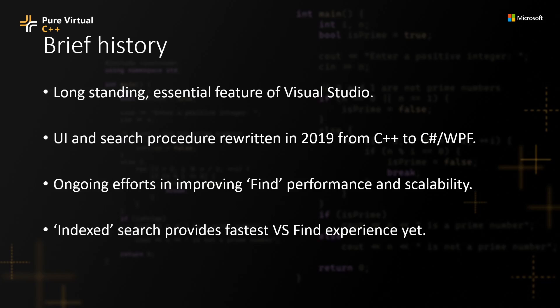Find in Files is a long-standing essential feature in Visual Studio — it goes back to its earliest releases. In 2019, the UI and search procedure were rewritten from the original C++ code to C# and WPF. We took this opportunity to bring a number of improvements, including improvements to accessibility, making it easier to use, making the UI much nicer to look at, and, of course, improving the overall search algorithm.